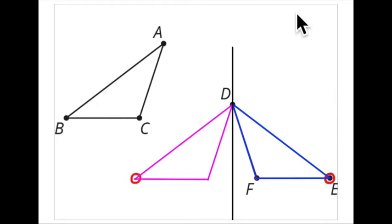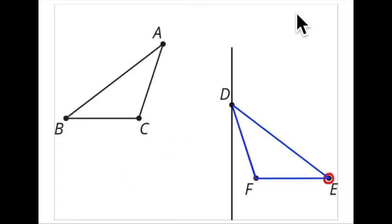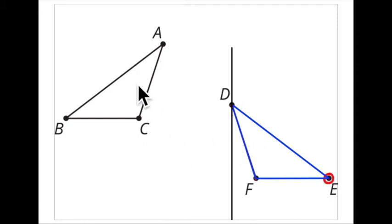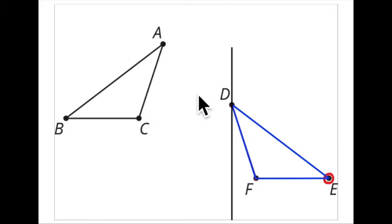You reflect it over and it maps to this image. The word we use is 'maps.' It is a reflection. I had to use a translation, a rotation, and a reflection — or just a translation and a reflection, depending on which approach you used.